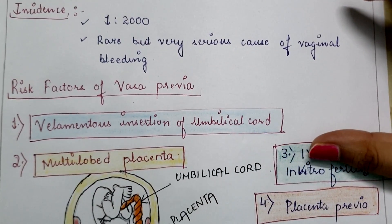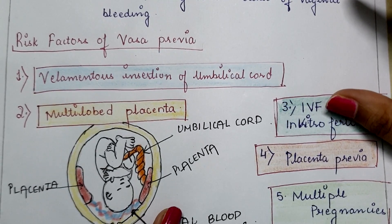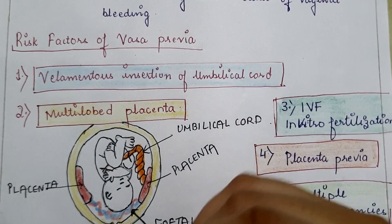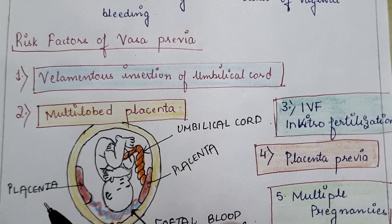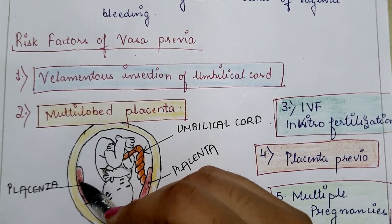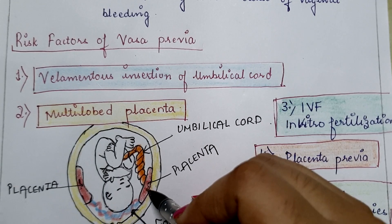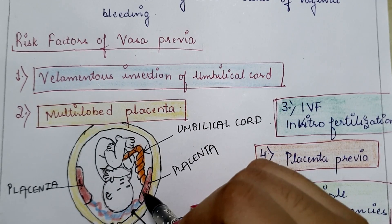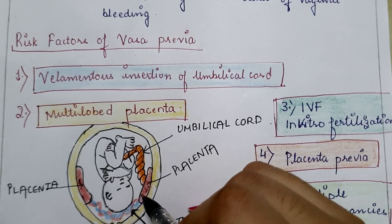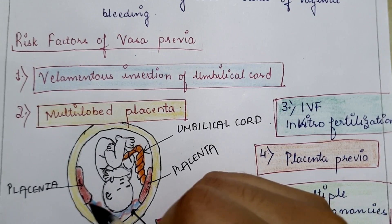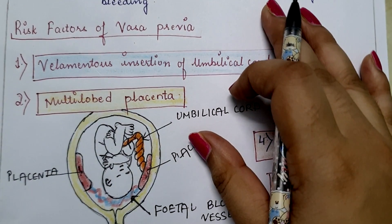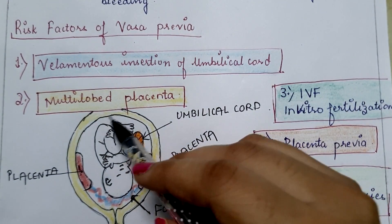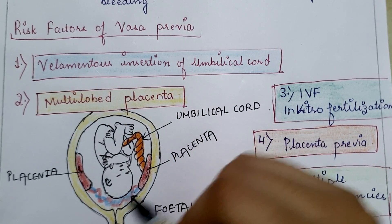Next is the multi-lobed placenta, also called bilobed placenta or succenturiate placenta. As you can see in this diagram, this is one lobe of placenta and this is another lobe, making it a bilobed placenta. Both lobes are connected by fetal blood vessels, so in the case of multi-lobed or bilobed placenta there are more chances of vasa previa.